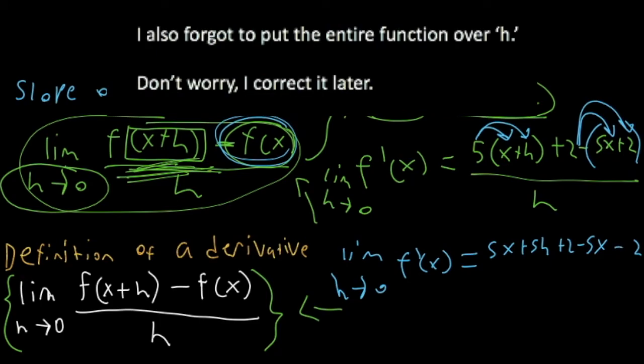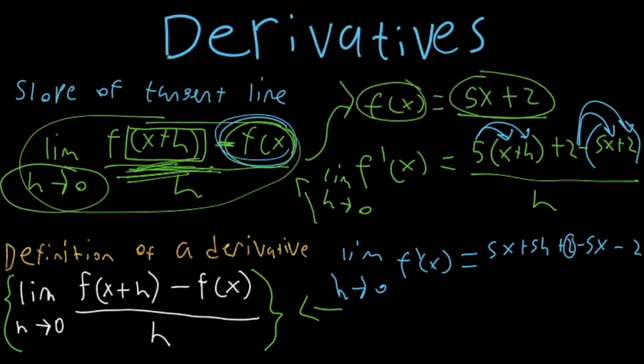And what we're now going to do is we're going to take this 2 and this 2, and we can cancel them because one of them is negative and the other one is positive. So we can cancel these 2s. And we can also cancel the negative 5x and the positive 5x. So those will cancel as well. And this is all over h.